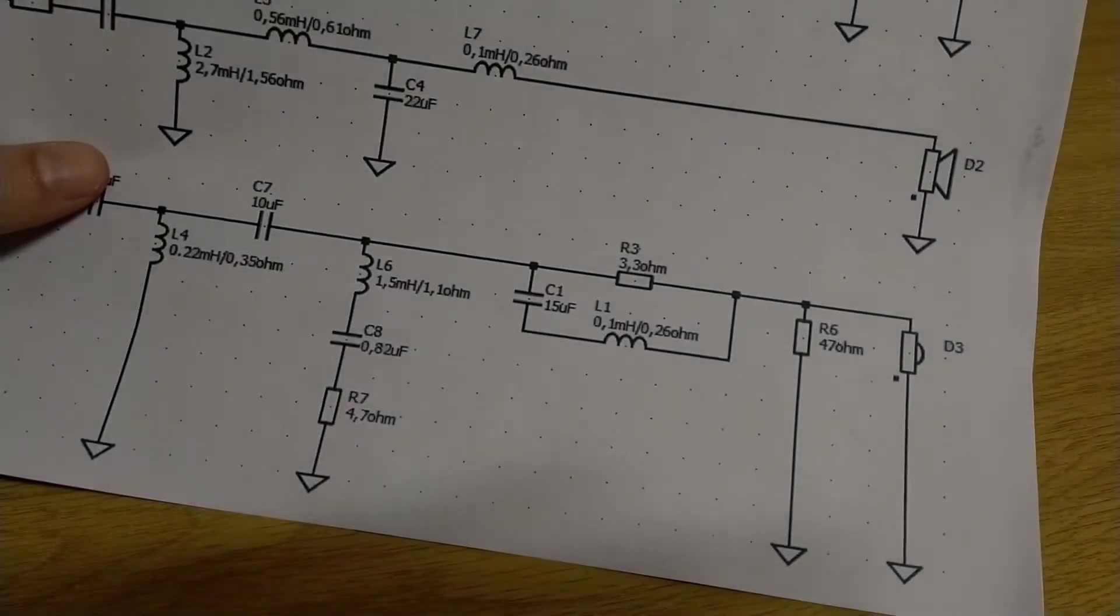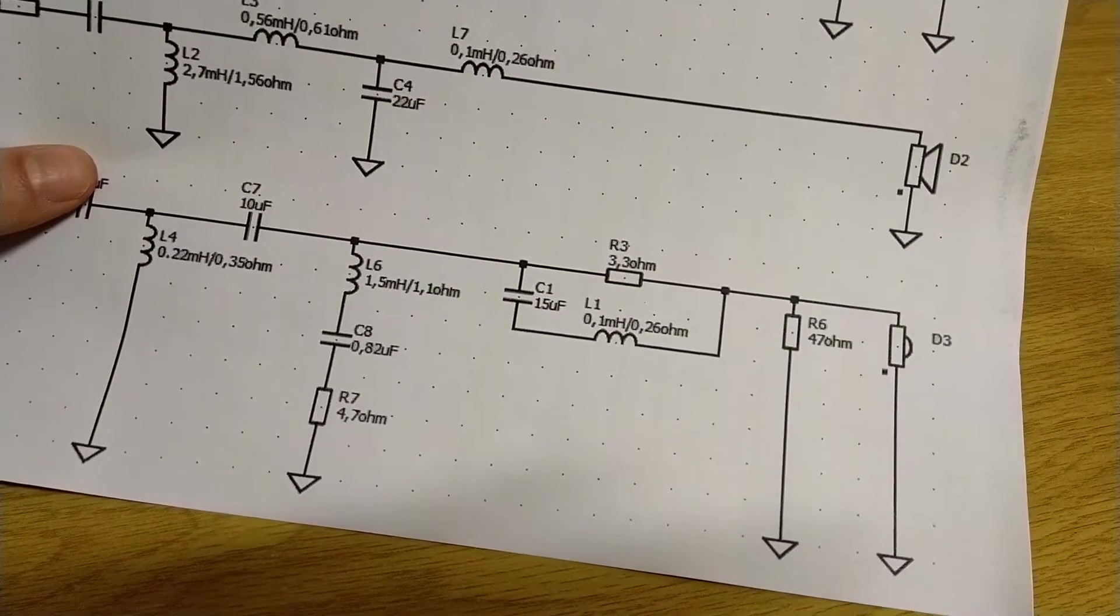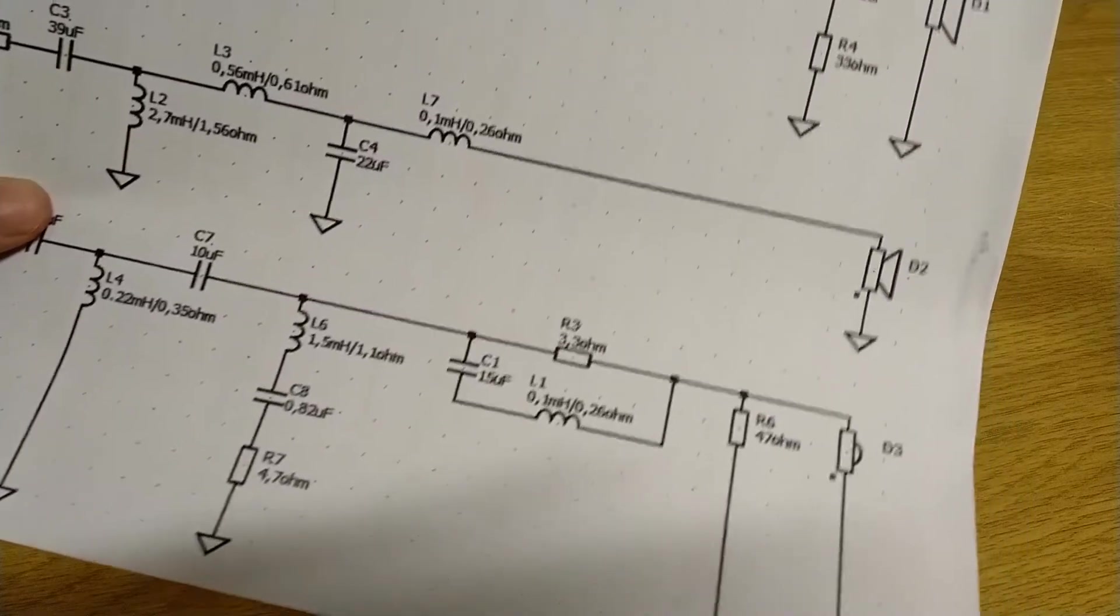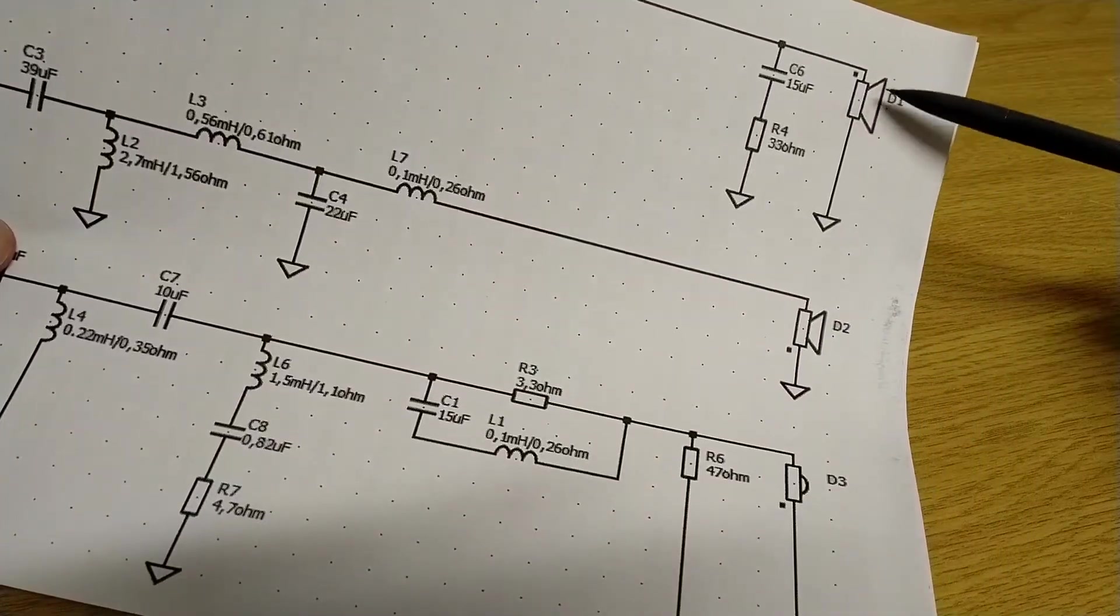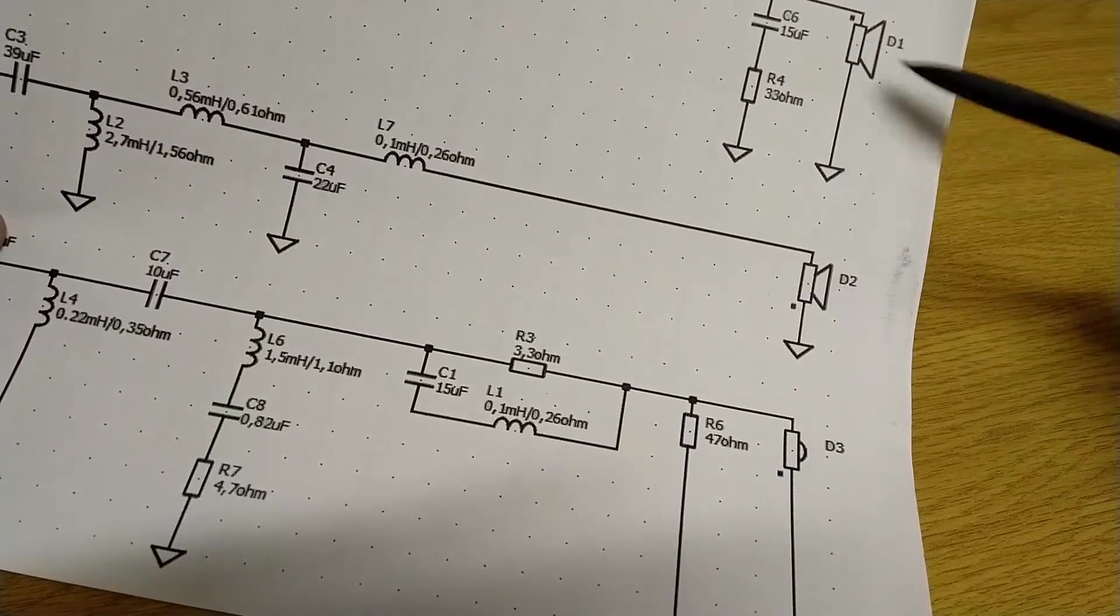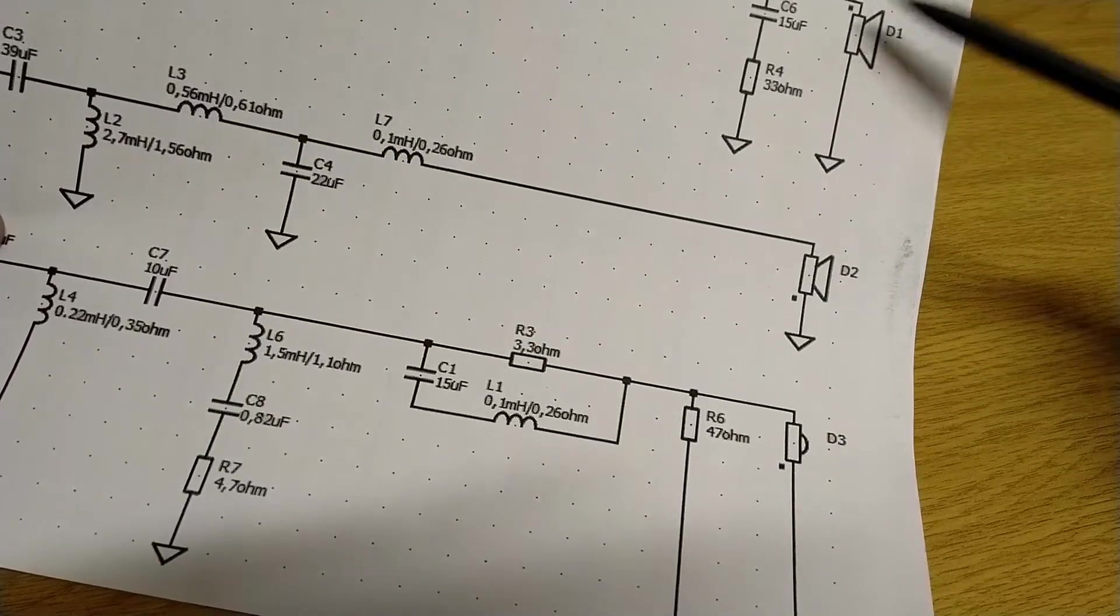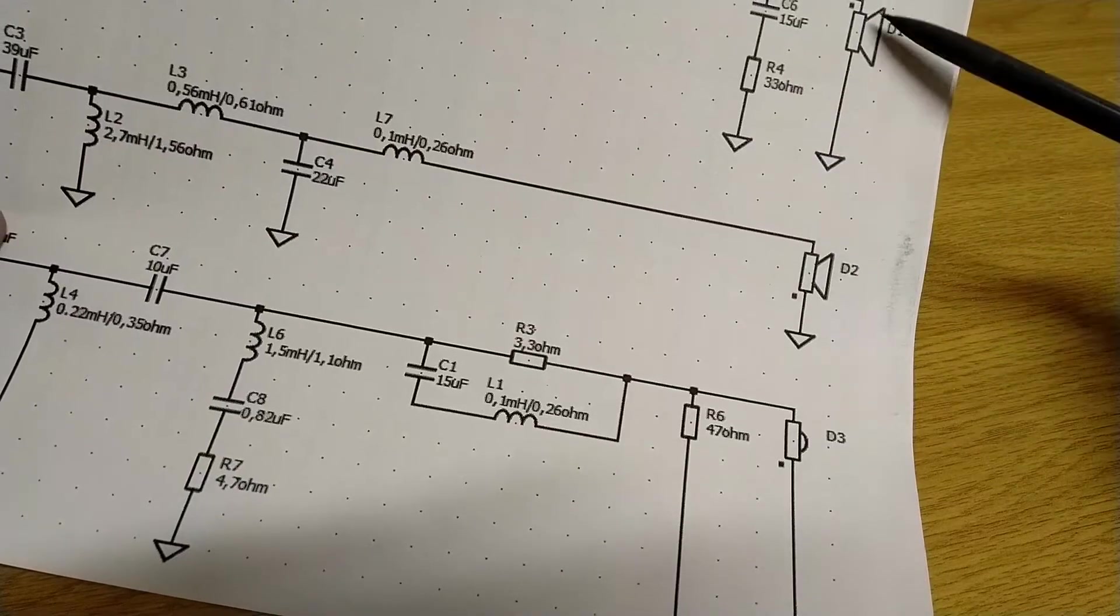When you're building a three-way speaker or a two-way loudspeaker, you have to have a crossover at some point. Here you can see we've got the three drivers, the bits that actually move up and down - the voice coil in each of them and a magnet.